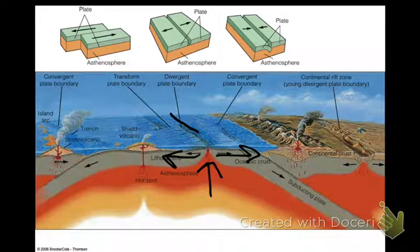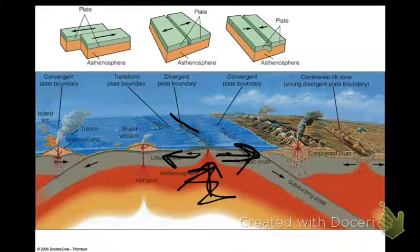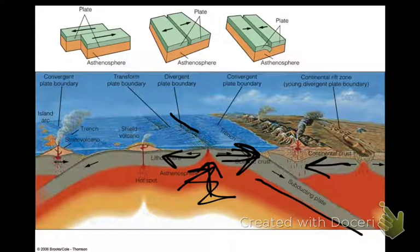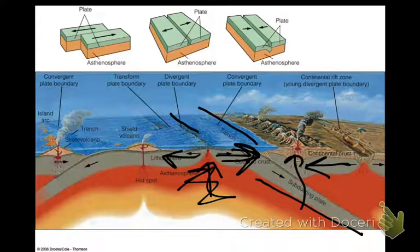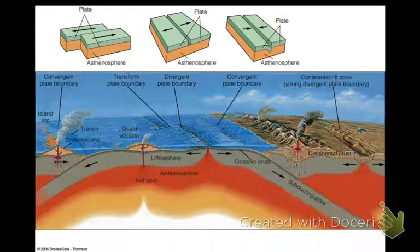The last one to look at is our oceanic-continental convergent boundary. We have one oceanic plate going this way and a continental one going this way. Again, you have your subduction zone. You have the trench along the whole subduction zone, and this will go up to create volcanoes.